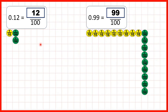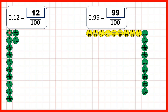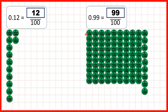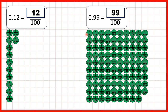We can also show this using place value counters. So for 0.12, we have 1 in our tenths and 2 in our hundredths. But the 1 tenth is the same as 10 hundredths, so altogether we have 12 hundredths. And with 0.99, we have 9 tenths and 9 hundredths. But each of our tenths can be exchanged for 10 hundredths, giving us 99 hundredths altogether.